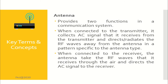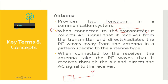The next component is antenna. Antenna provides two functions in the communication system. The first one is when connected to the transmitter: the antenna will collect the signal it receives from the transmitter and radiates the waves away.